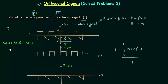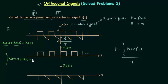The next step is to find out whether x1(t) and x2(t) are orthogonal or not. The condition of orthogonality is: the integral from 0 to T of x1(t)·x2(t) dt equals 0. If this condition is satisfied by x1(t) and x2(t), we can say that they are orthogonal signals.